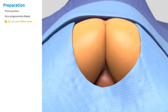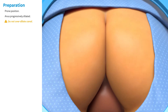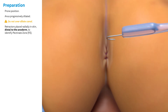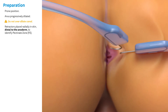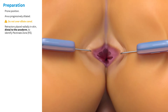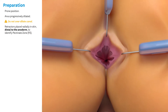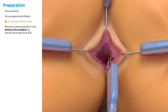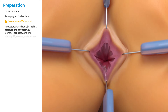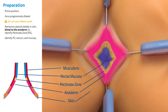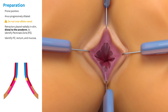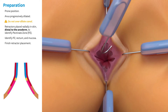Next, the pectinate zone must be identified. Retractors are placed radially in the skin, distal to the anoderm. Identify the anoderm, the pectinate zone, and rectal mucosa before proceeding. Adjust the retractors as needed and finish retractor placement.